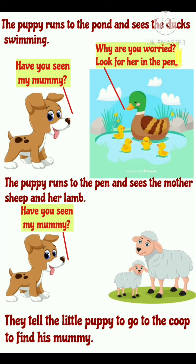Then the puppy runs to the pen and sees the mother sheep and her lamb. अब puppy pen की तरफ भागता है और वहाँ पर mother sheep और उनके छोटे से बच्चे lamb को देखता है. उनसे भी वह यही पूछता है — Have you seen my mommy? They tell the little puppy to go to the coop to find his mommy. वे कहती हैं — जाओ coop में और अपनी mummy को वहाँ ढूंढो.